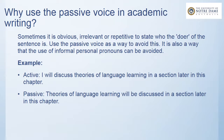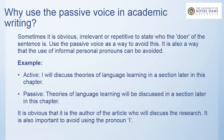So instead of saying 'I will discuss theories of language learning' — that's active — we say 'theories of language learning will be discussed.' Now we have our subject, our 'be' verb, and our past participle. It is obvious that it is the author of the article who will discuss the research. It is also important to avoid using 'I'.